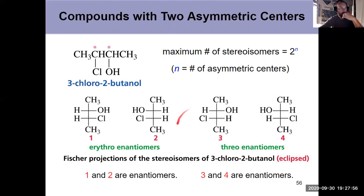But here, with two asymmetric centers, two carbons that are bonded to four different groups, 2 to the 2. 2 squared is four stereoisomers. And those four stereoisomers consist of two individual pairs of enantiomers.